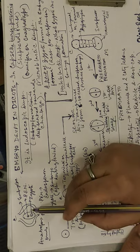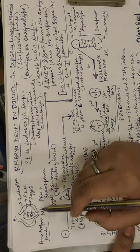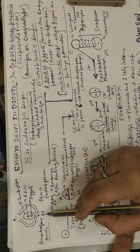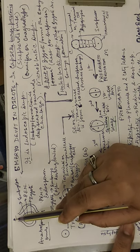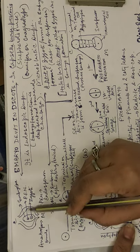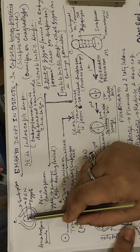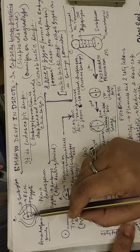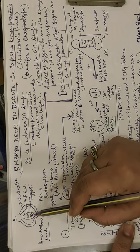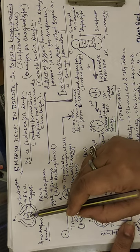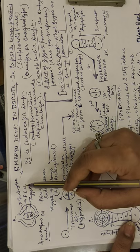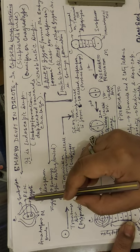Let us understand the anatropous ovule which I have drawn here. You can see the micropyle marked M and the chalaza marked C. Inside this ovule is the embryo sac, and within it the positions of the zygote and the primary endosperm nucleus are marked. The zygote is towards the micropyle end because the egg apparatus was towards the micropyle, so definitely the zygote is towards the micropyle.